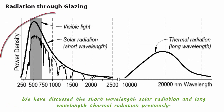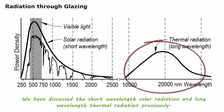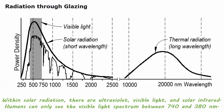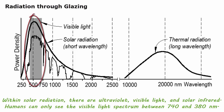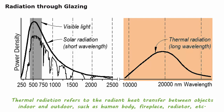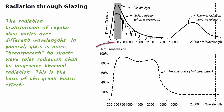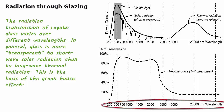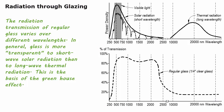We have discussed short-wavelength solar radiation and long-wavelength thermal radiation previously. Within solar radiation, there is ultraviolet, visible light, and solar infrared — humans can only see the visible light spectrum between 380 and 740 nanometers. Thermal radiation refers to radiant heat transfer between objects indoors and outdoors, such as the human body, fireplace, radiators, etc. The radiation transmission of regular glass varies over different wavelengths. In general, glass is more transparent to short-wave solar radiation than to long-wave thermal radiation — this is the basis of the greenhouse effect.